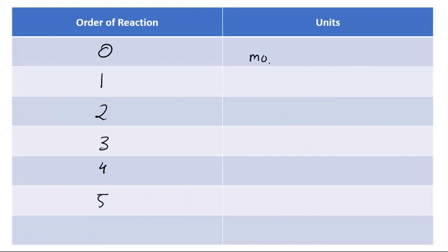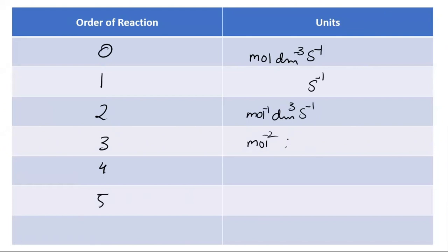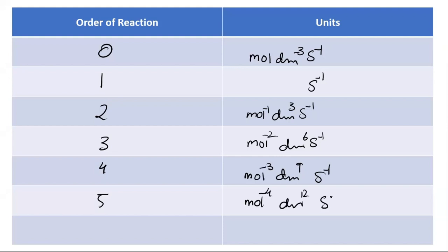If the order is 0, then units of k are mol dm⁻³ s⁻¹. If it is 1, then s⁻¹. If it is 2, then mol⁻¹ dm³ s⁻¹. If it is 3, then mol⁻² dm⁶ s⁻¹. If it is 4, then mol⁻³ dm⁹ s⁻¹. If it is 5, then mol⁻⁴ dm¹² s⁻¹.